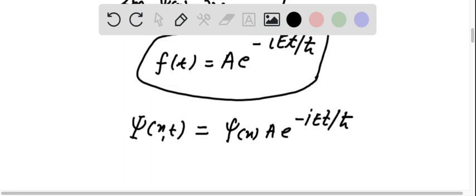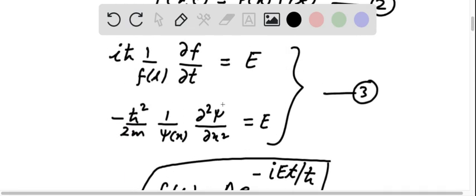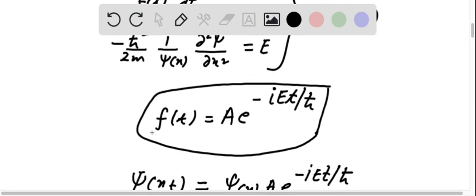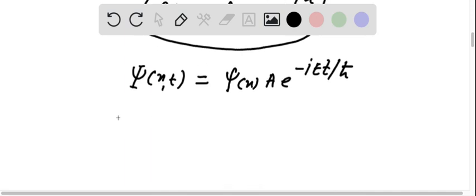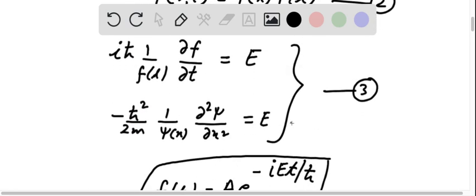The second equation is known as the time-independent Schrödinger equation. Let us rewrite this equation in the form given as a hint in the question.